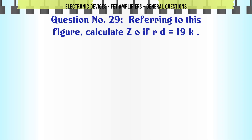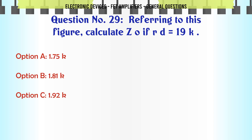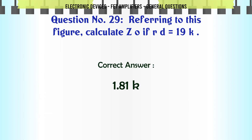Referring to this figure, calculate ZO for RD = 19K. A. 1.75K. B. 1.81K. C. 1.92K. D. 2.00K. The correct answer is 1.81K.